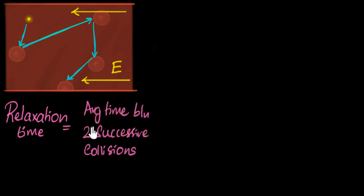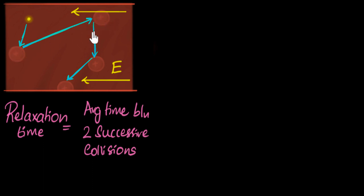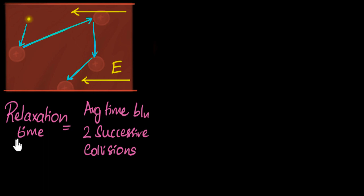If this number was say one minute as an example, then what it means is that some collisions last for say three minutes or four minutes, some will last for half a minute or maybe a few seconds. But if you average that out, that number will be one minute. That's the meaning of relaxation time, and the symbol we use for this is tau.